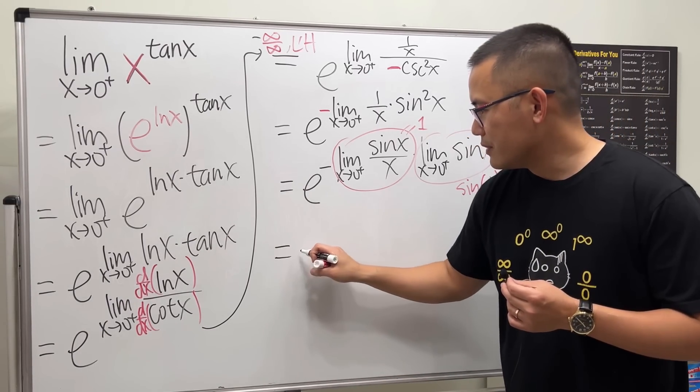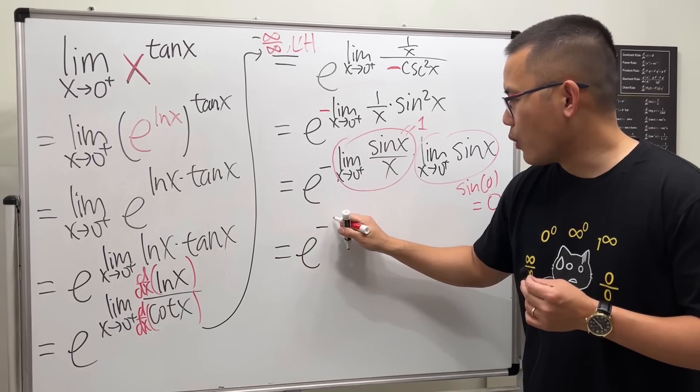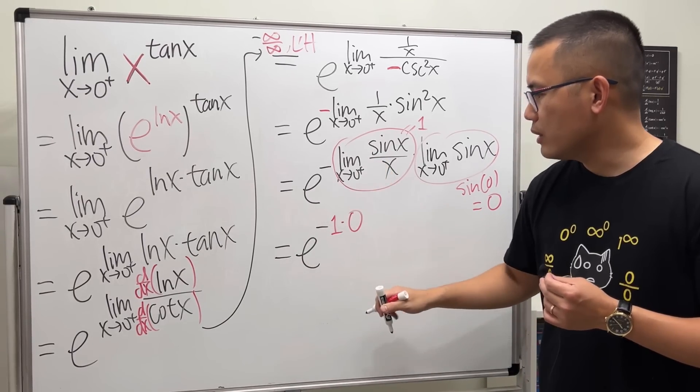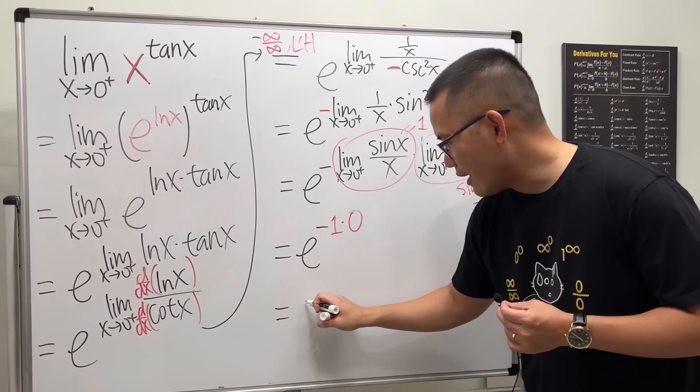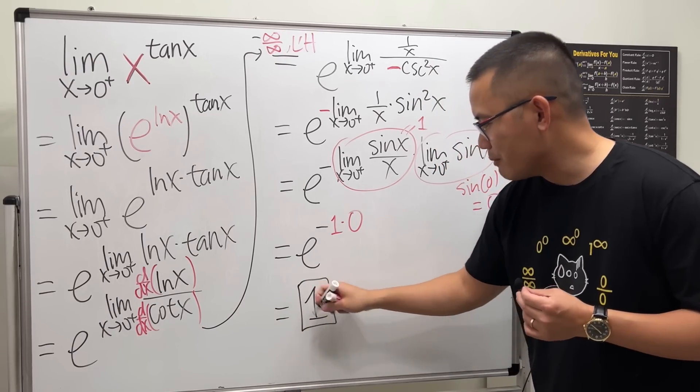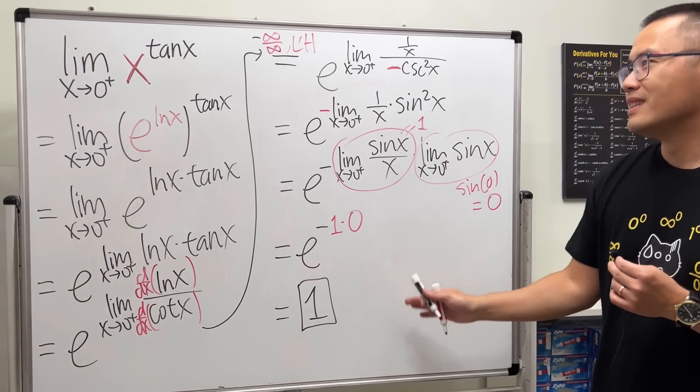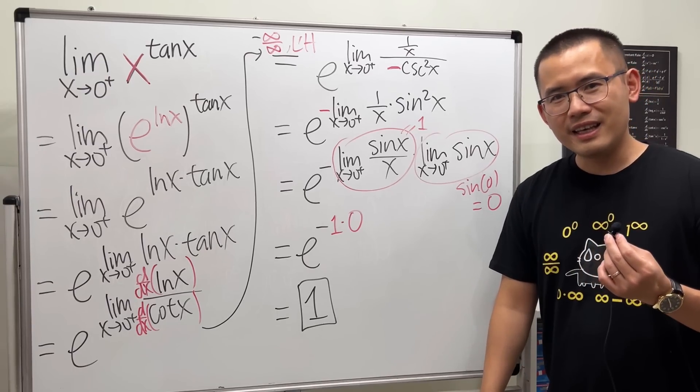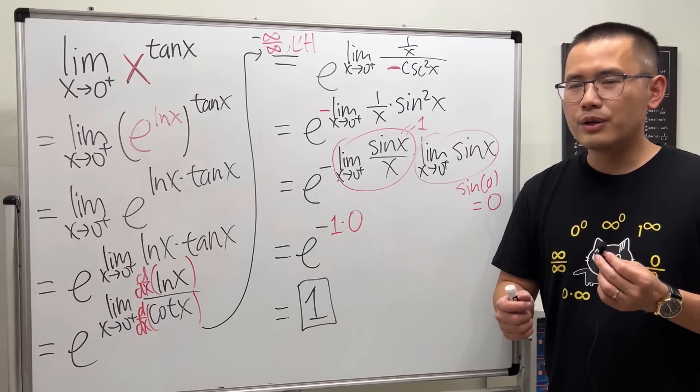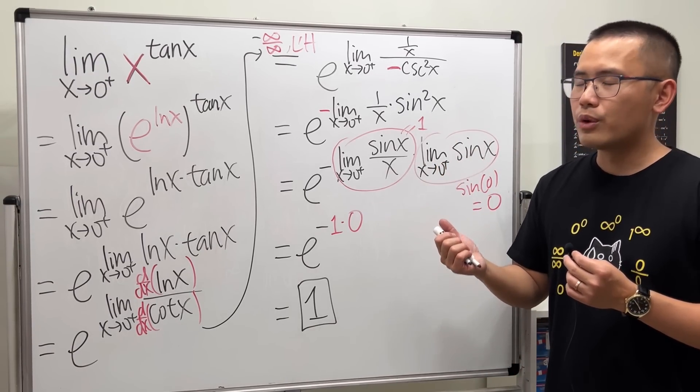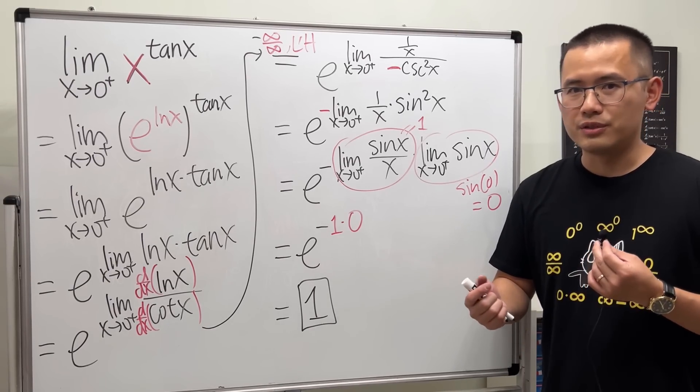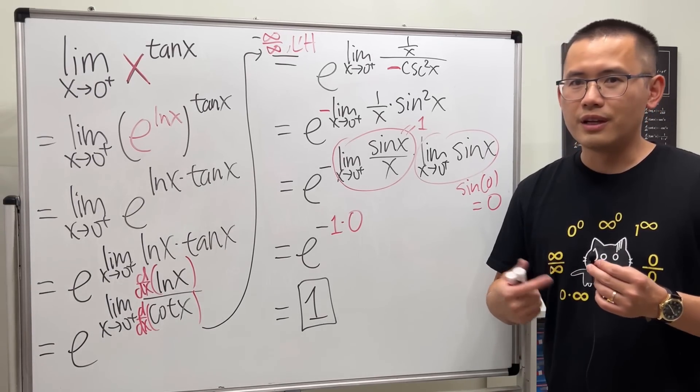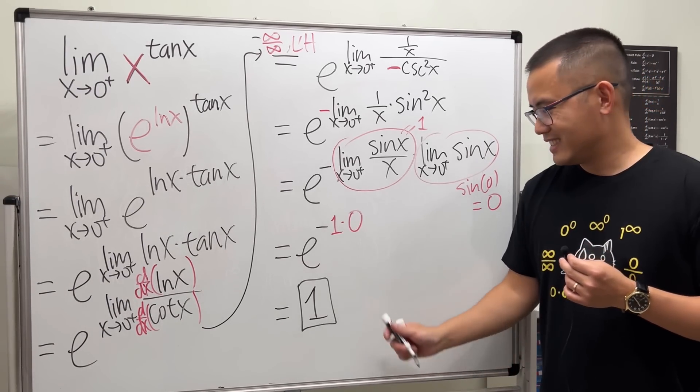So all in all, we have e to the negative one times zero, which is of course e to the zero's power. And there you have it, this is the one that we have been looking for. So hopefully this right here helps. And again, go ahead and check out the videos where you have zero to the zero's power, but you end up with zero, and you may end up with other numbers such as e. And if you're interested in this shirt, the link is in the description as well. That's it.